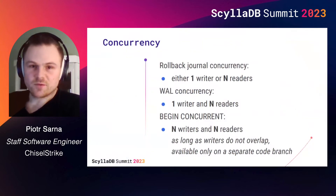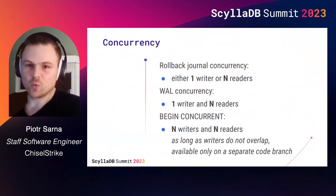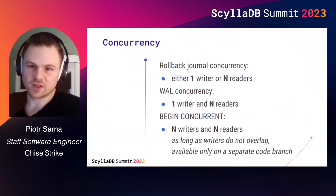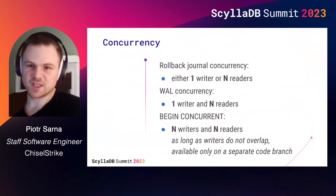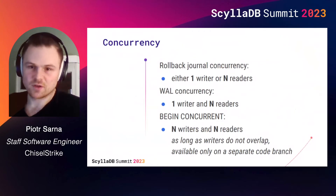A quite important feature of WAL journaling mode is its concurrency. The original rollback journal forced the writer to take an exclusive lock, preventing any readers from reading the database. WAL, however, allows readers to coexist with a writer because the main database file is never written to directly. The log only grows with new pages being appended, so readers can always remember a snapshot of the database by remembering a particular offset of the write-ahead log and never reading past that offset. This is a huge benefit for concurrency, especially for read-intensive workloads.